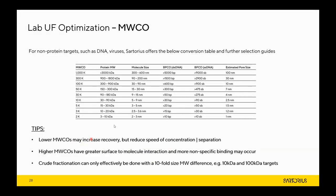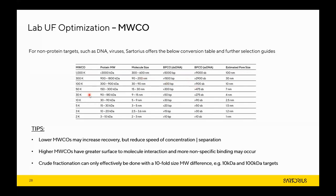For DNA or viruses, our technical selection guides help you relate molecule size or base pair length to the appropriate MWCO. Key tips: lower MWCO membranes may increase recoveries but reduce speed of concentration. Higher MWCO membranes have greater surface-to-molecule interaction and may actually create more non-specific binding. Crude fractionation can only be done with a tenfold size difference as previously mentioned.